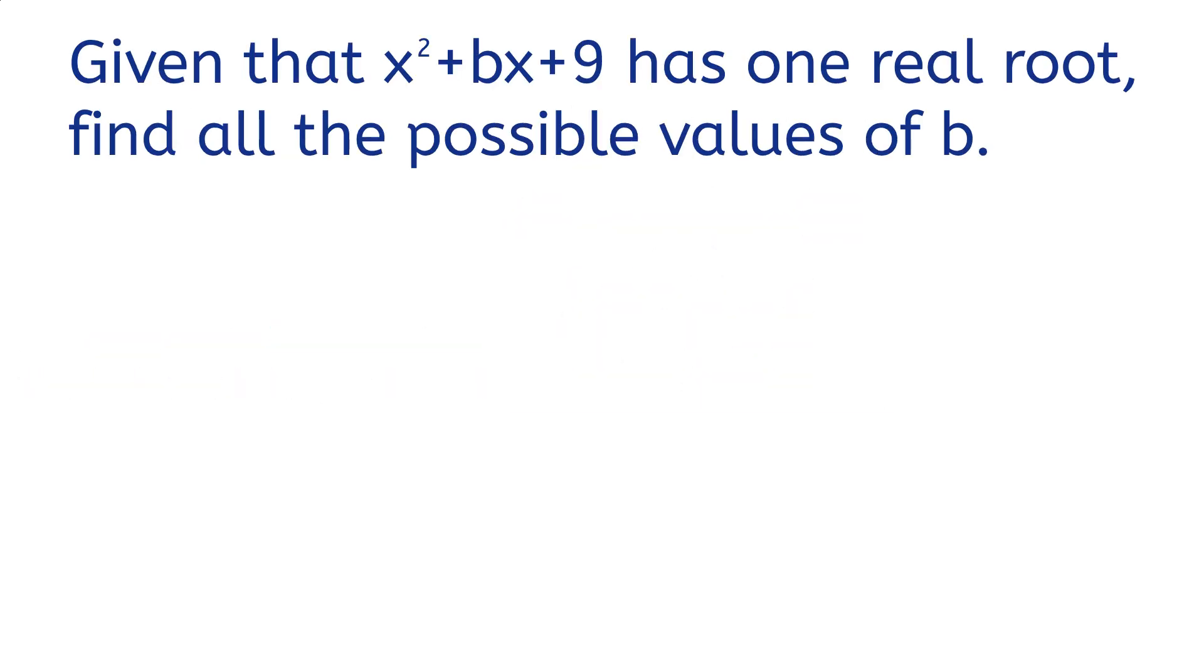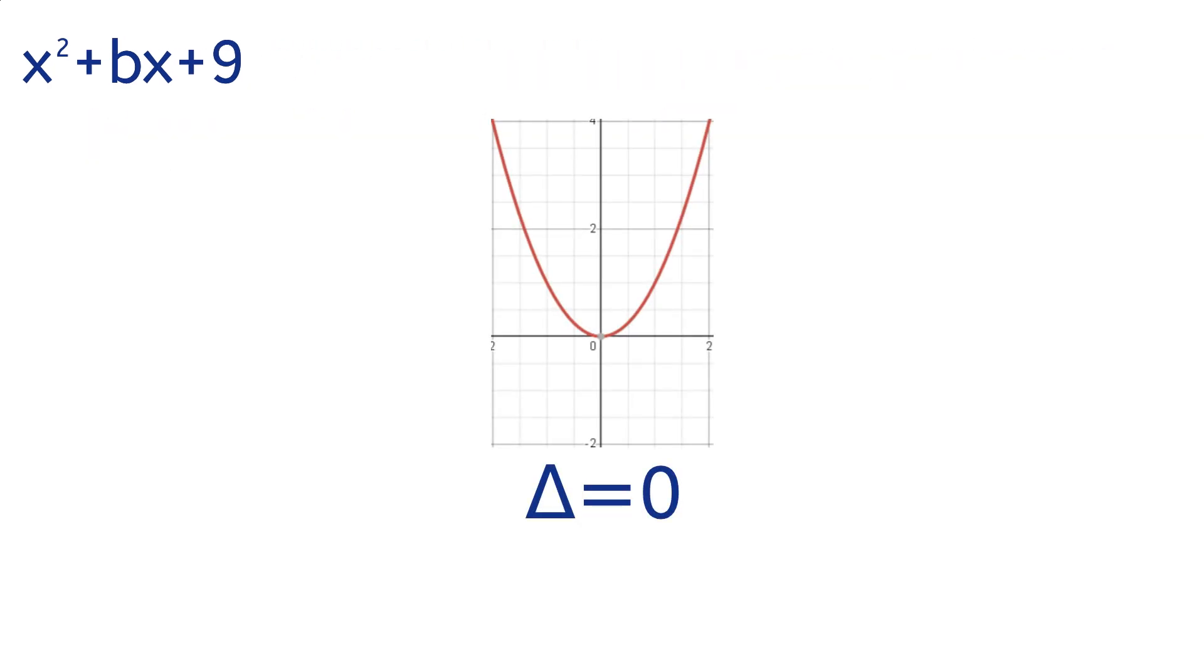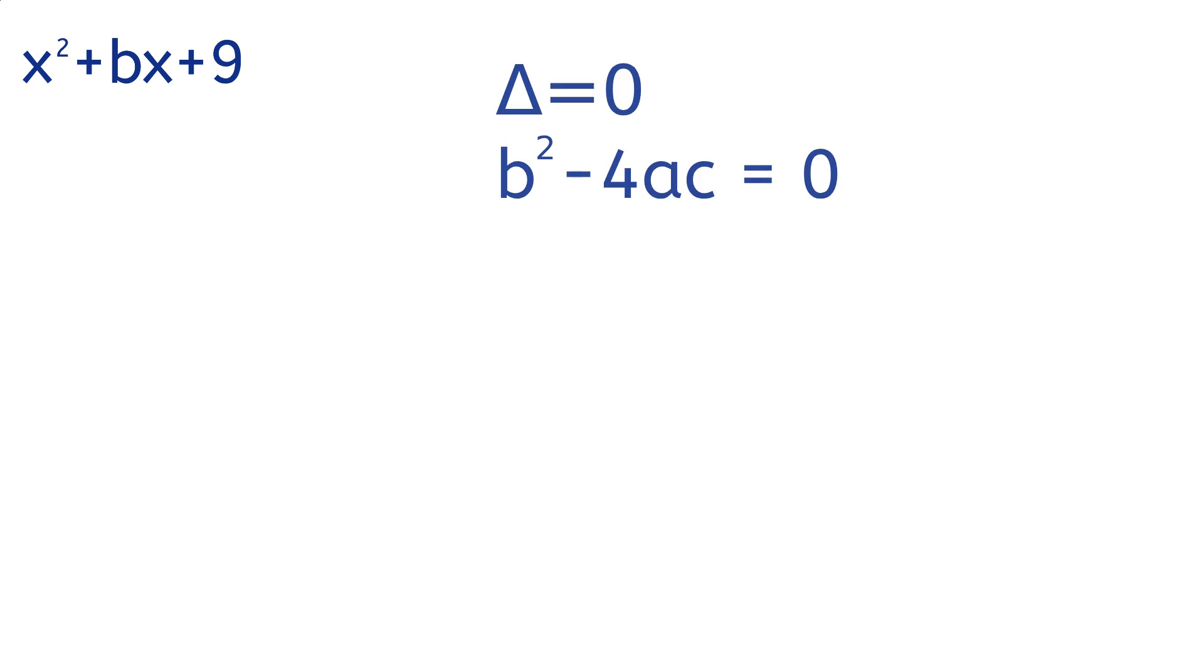Let's try this next problem. Given that x squared plus bx plus 9 has one real root, find all the possible values of b. Remember how the discriminant equals 0 when there is one real root? Well, we can set the discriminant equal to 0 and then solve for b.